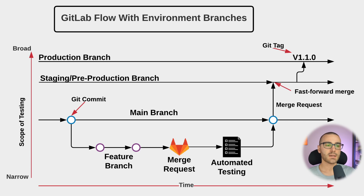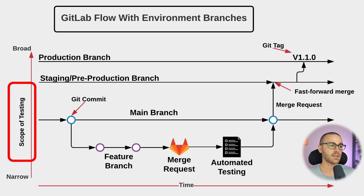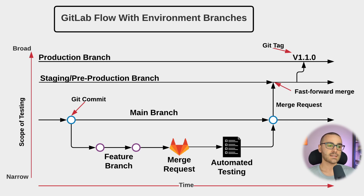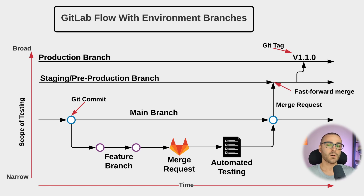After the feature branch gets merged into the main branch, our work is still not complete. What should happen is additional testing. Notice the y-axis on the left-hand side labeled 'scope of testing' — narrow at the bottom, broad at the top. When testing our feature branch, our scope of testing is just the feature we wrote, so we have unit tests. Once we promote our feature into the main branch, we're testing our feature along with other features to see how they integrate. As we promote changes into higher-level environment branches, the scope of testing becomes more and more broad.